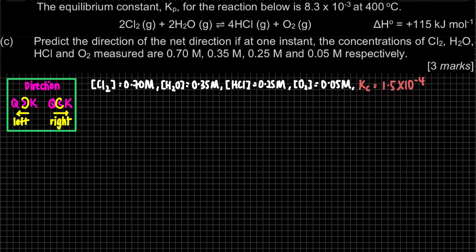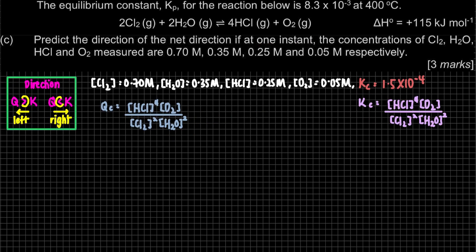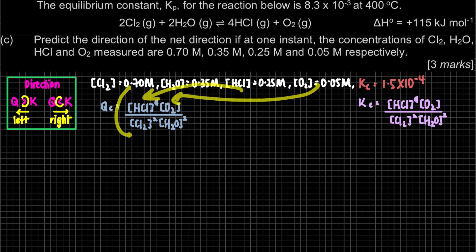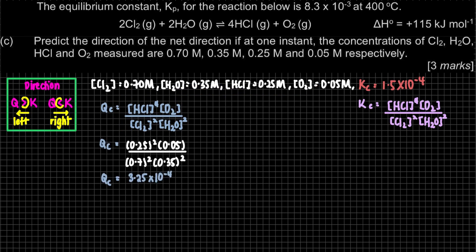If the question already gives concentration, use it directly and compare with KC. QC has the same expression as KC — product over reactant — but Q is calculated at any instant, not necessarily at equilibrium. Substituting the values: HCl = 0.25, O₂ = 0.05, Cl₂ = 0.70, H₂O = 0.35 into the expression, you will get QC = 3.25 × 10⁻⁴.